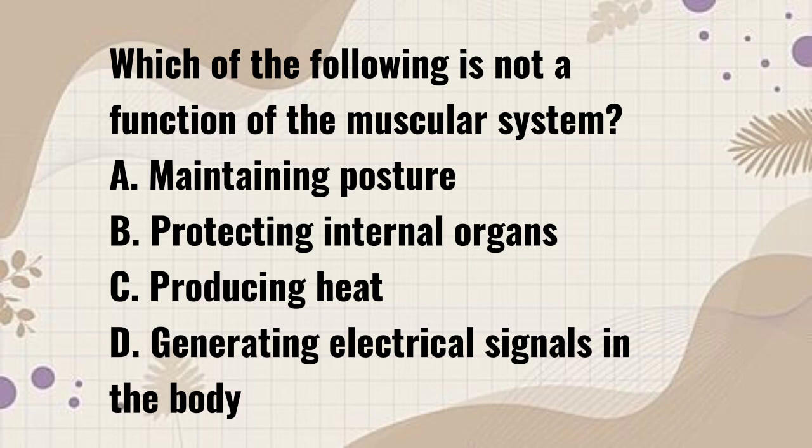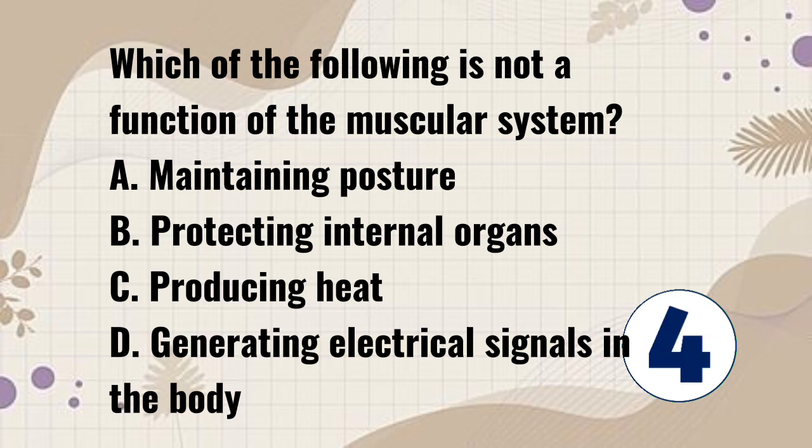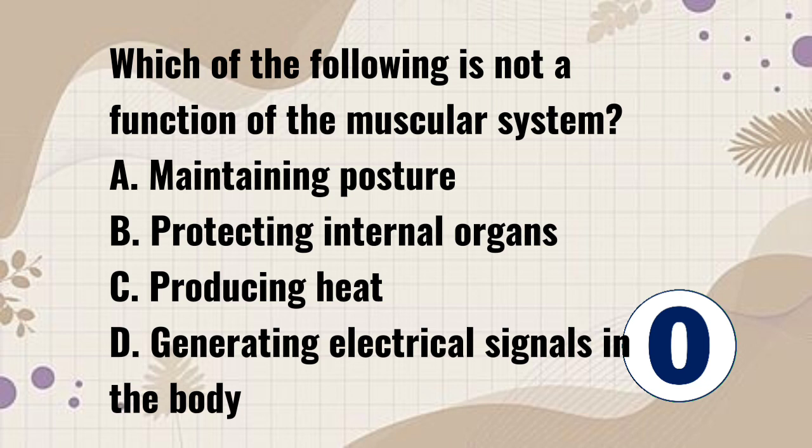Which of the following is not a function of the muscular system? A. Maintaining posture. B. Protecting internal organs. C. Producing heat. D. Generating electrical signals in the body.